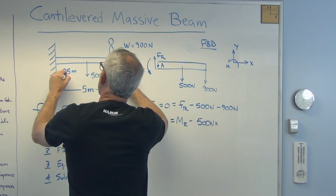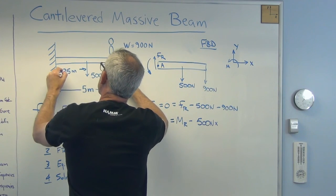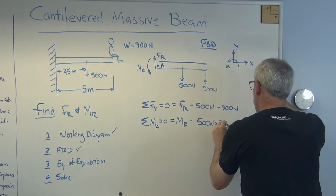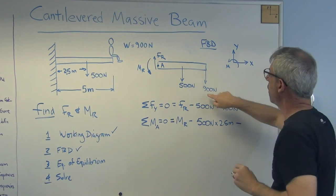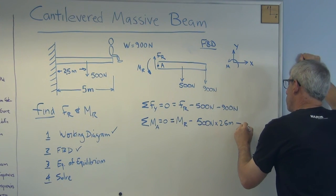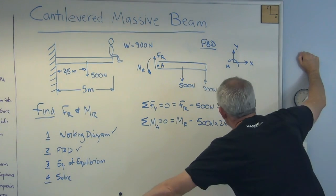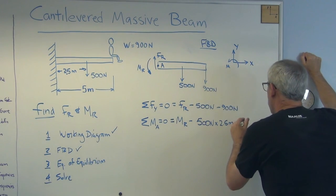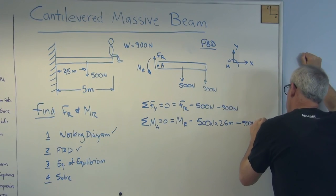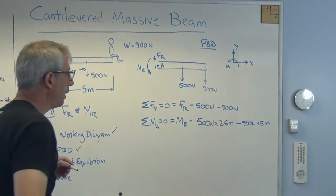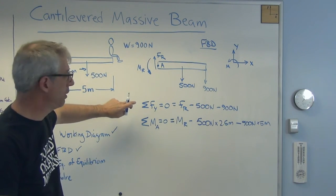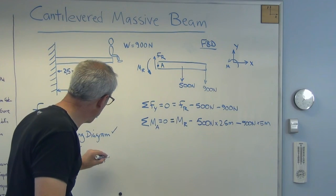So that's 2.5 meters minus, now I've got another negative moment here. That's going to be 900 newtons times 5 meters. So there you go. This is sum of the forces has to be zero. Sum of the moments has to be zero. Those are the equations of equilibrium. So I did that.